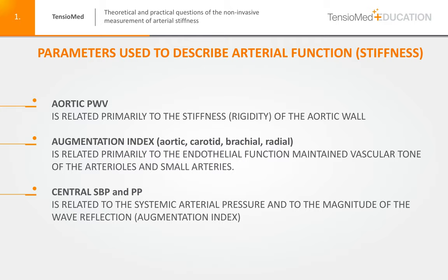The third commonly used parameter to describe arterial function is the central aortic systolic blood pressure and the central pulse pressure. The central systolic blood pressure and pulse pressure are basically determined by the systemic arterial pressure, but very much influenced by the so-called wave reflection — systolic wave reflection. It is also related to the augmentation index, which is based on the aortic wave reflection in the second part of the systole.